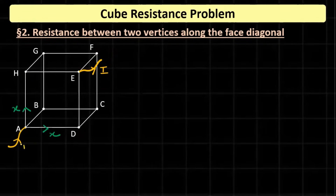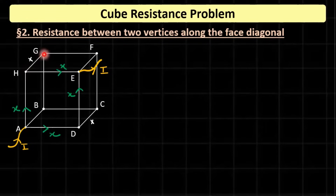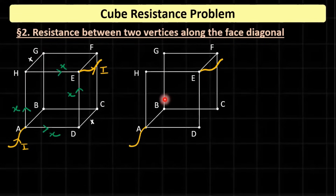Applying KCL at the intermediate junctions: current X goes one way and current X goes the other, so no current flows on certain connecting wires. Those wires carry zero current and can be removed from the network. We can now replace the original cube with this simplified equivalent circuit.